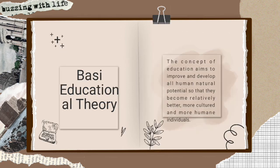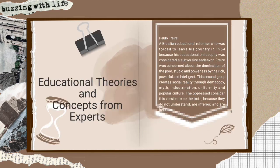Now we are going to basic educational theory. The concept of education aims to improve and develop human natural potential so that they become relatively better, more cultural, and more human individuals.